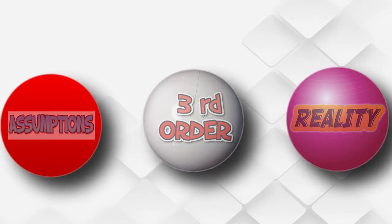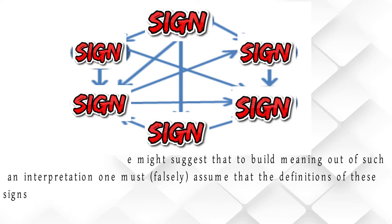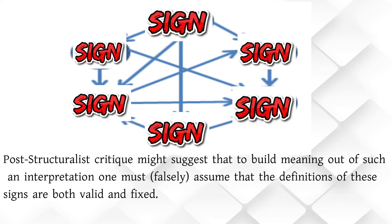Building upon structuralist conceptions of reality mediated by the interrelationship between signs, a poststructuralist critic might suggest that to build meaning out of such an interpretation, one must falsely assume that the definitions of the signs are both valid and fixed.